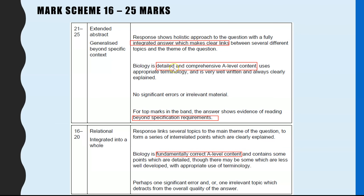The biology is detailed and comprehensive, uses appropriate terminology, and is well explained. To get into this top box, everything you write has to be detailed and correct A-level biology with nothing irrelevant included. That would get you 23 marks.